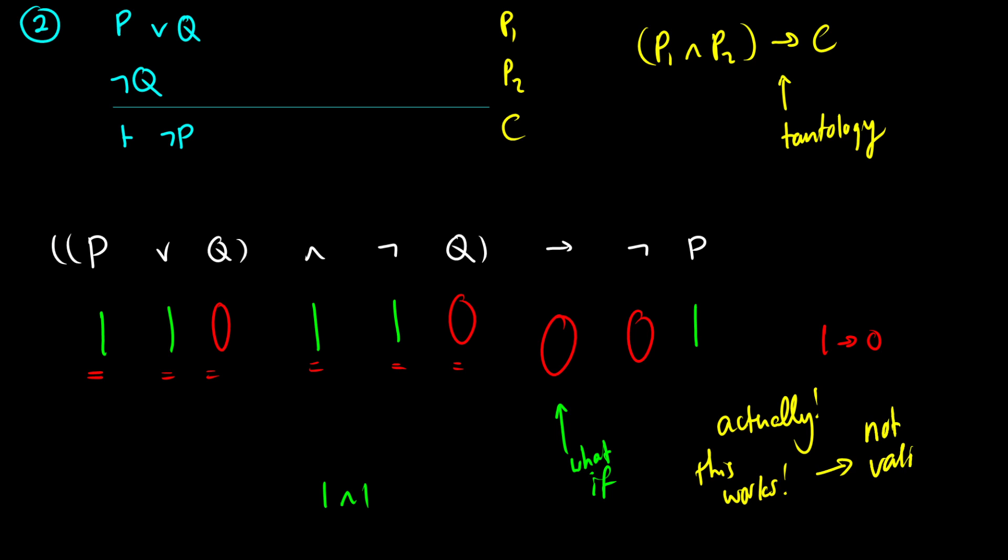It is possible to construct a row where this entire thing is false. Therefore, this is not a valid argument. This is not valid, we can have a row that's false. So yeah, if this were valid, this would be impossible to construct. But because this is possible, because this assignment of truth values is possible, it's not a tautology. It could be contingent, it could be a contradiction, but it has to be a tautology to be valid. Therefore, it's not a tautology, it's not a valid argument.